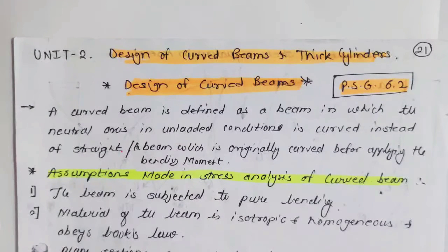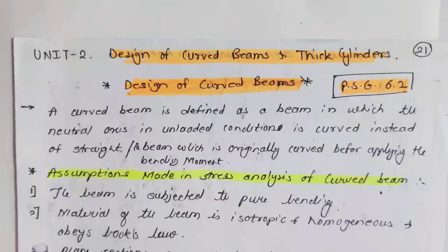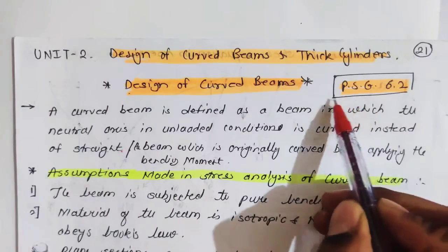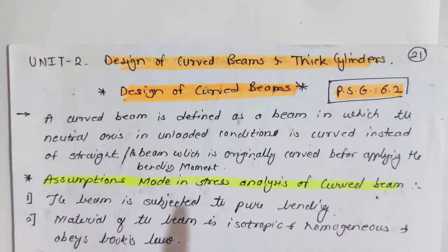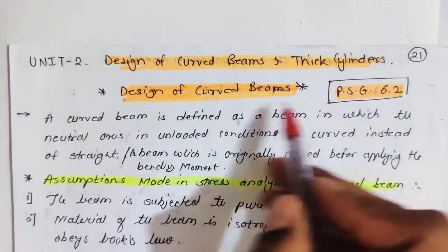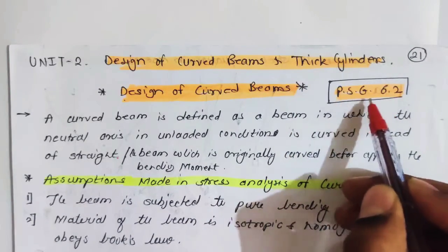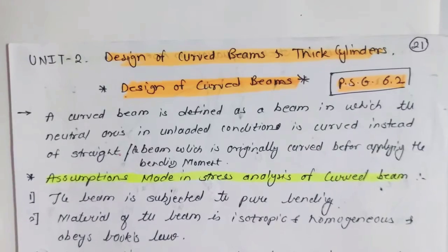In this video we will see Module 2 of machine design, that is design of curved beams and thick cylinders. This module is divided into two parts: first part is design of curved beams and second part is thick cylinders. We will go for the first part, design of curved beams. It is covered in PSG 6.2 — we have already seen PSG 6.8, which was for buckling of screws.